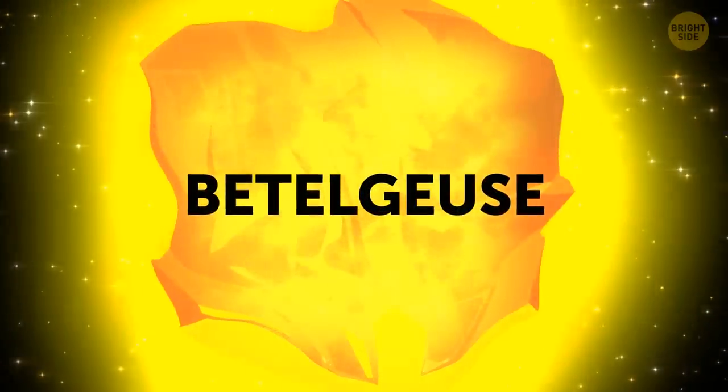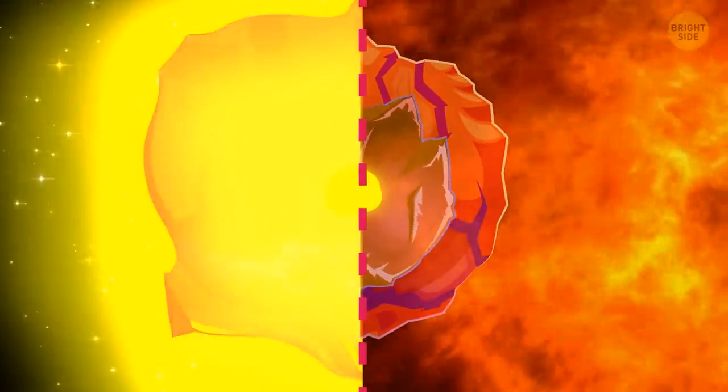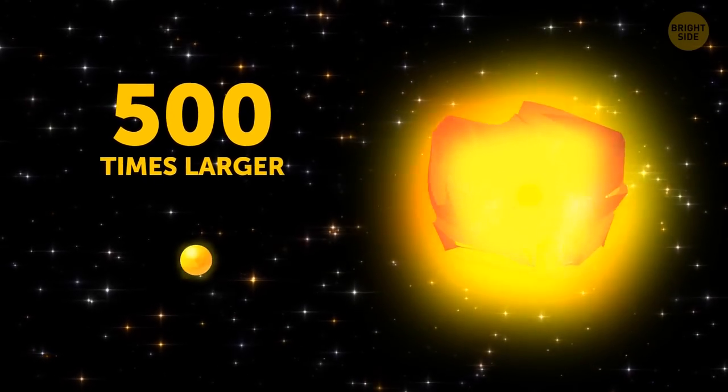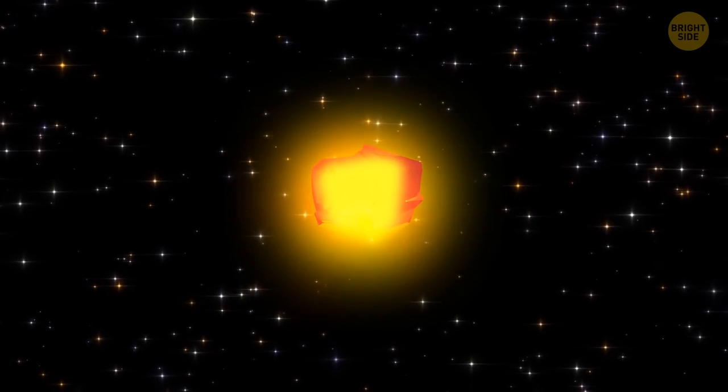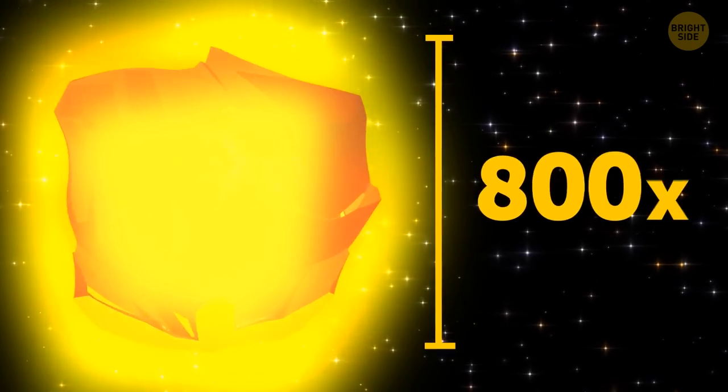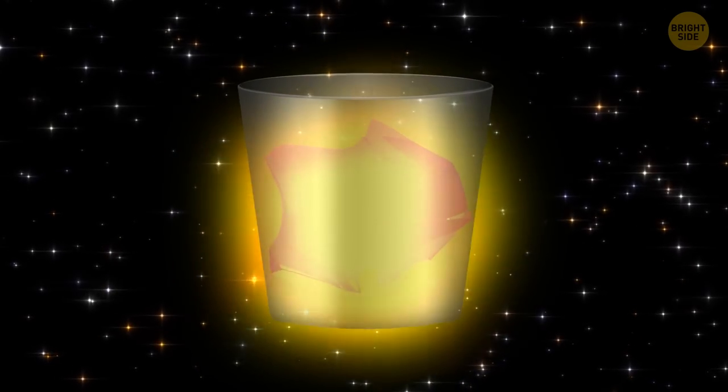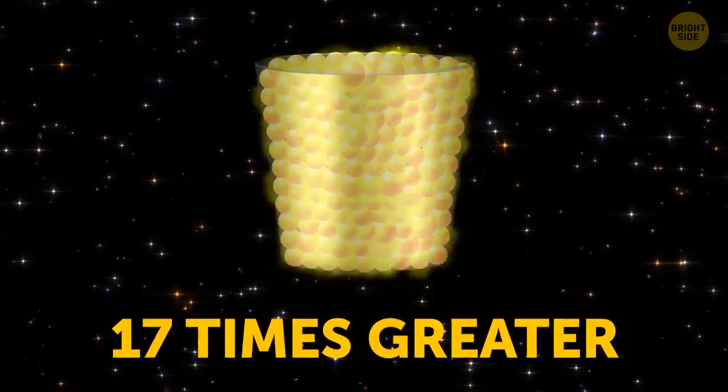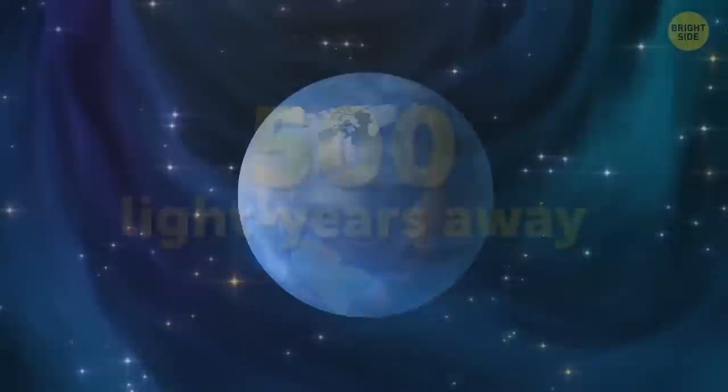Betelgeuse, a red supergiant. This ball of boiling plasma is one of the largest stars in our galaxy, and one of the brightest. It's about 500 times larger than the sun. But Betelgeuse is pulsating, getting bigger and smaller. At its peak, it becomes 800 times its average size. If this star were a bucket, it would fit about 300 million suns, even though its weight is only 17 times greater. And here, about 500 light-years away, is Earth.